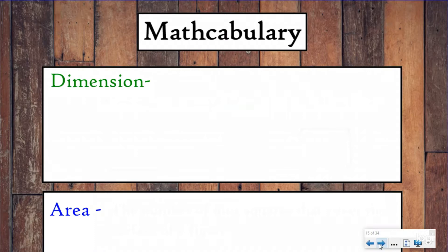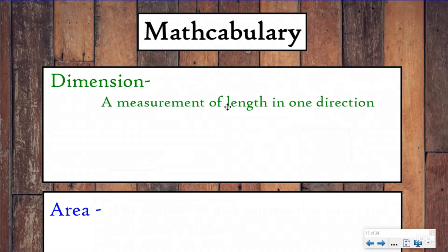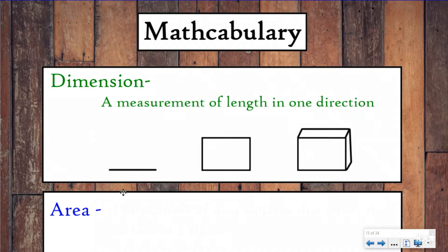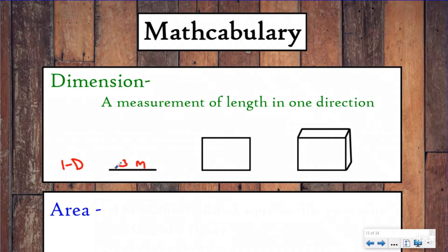Our first mathcabulary word is dimension. A dimension is a measurement of length in one direction. So here we have a line, a rectangle, and a cube. A line is what we would call one dimensional — 1D — because it only has a measurement of length in one direction. So let's say this was three meters; we measured but only in one direction.